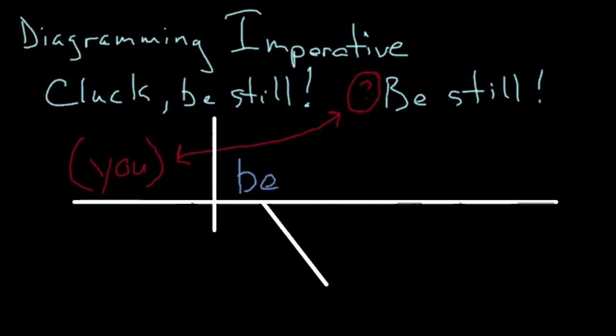If you can recall, an adverb modifies a verb, adjective, or another adverb. So, the word still goes on a slanted line underneath the verb.